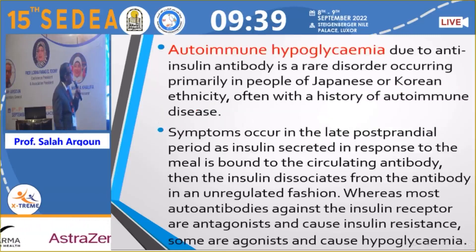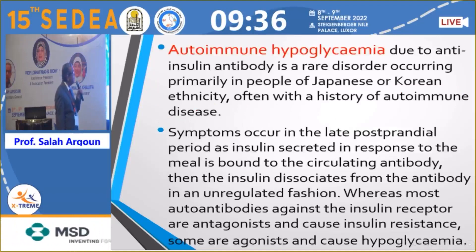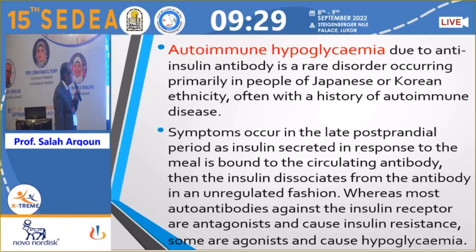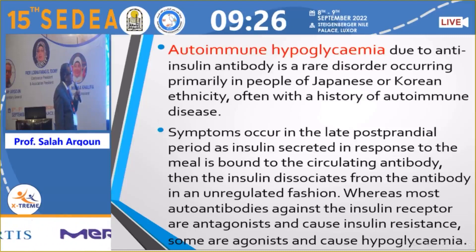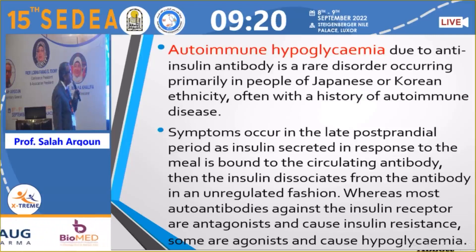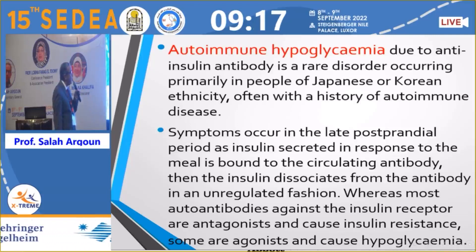Autoimmune hypoglycemia involving anti-insulin antibodies is a rare disorder. It is more commonly seen in Japanese and Korean individuals and is associated with a history of autoimmune disease. Symptoms occur in the late post-prandial period, when insulin dissociates from circulating antibodies in an unregulated fashion.